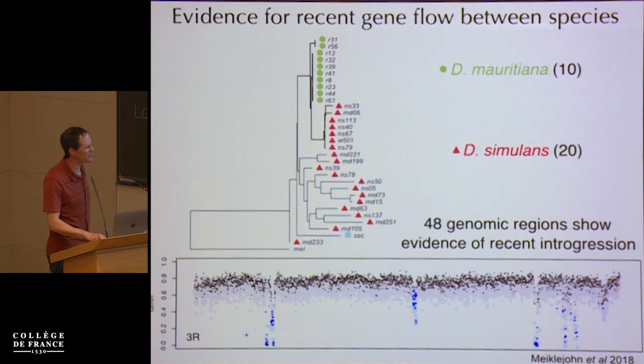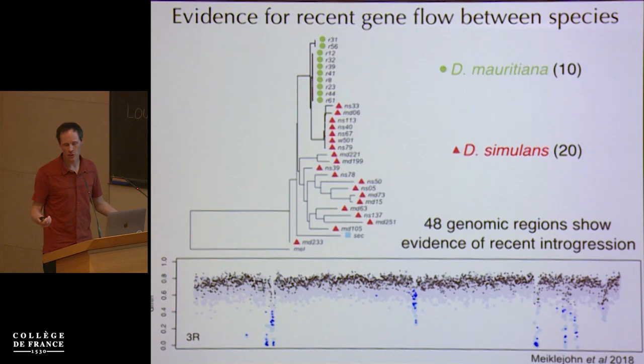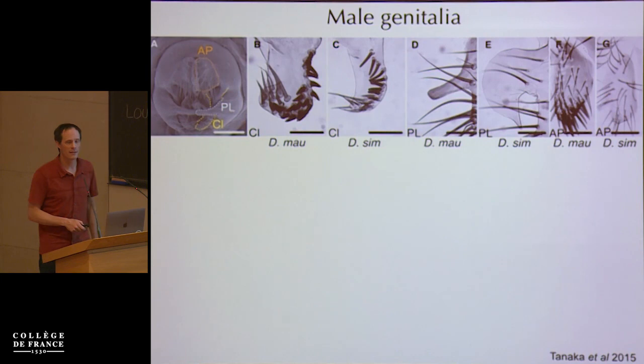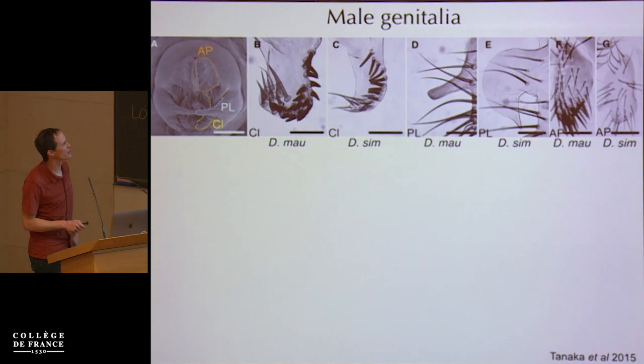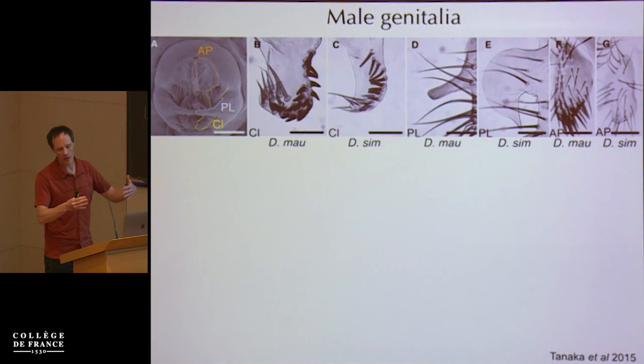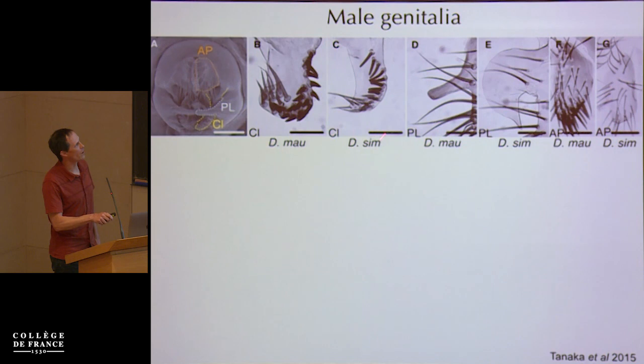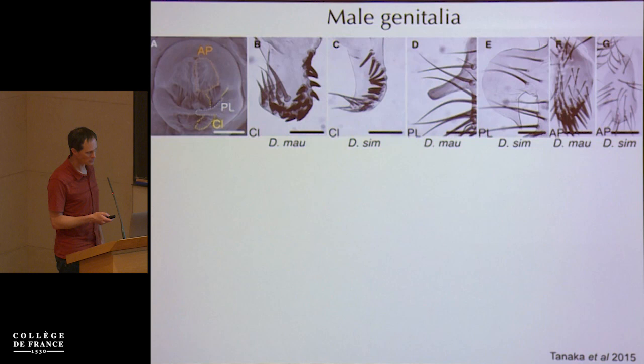So if these two populations have lots of segregating ancestral polymorphism and are sharing genes, why do we call them different species? There are a few reasons. One is that they do show some morphological differentiation, particularly in male and female reproductive structures. This is the business end of a male fly, with structures that interact with the female during copulation — the anal plate, the posterior lobe, and the claspers. They're quite different in shape and the architecture of the bristles.